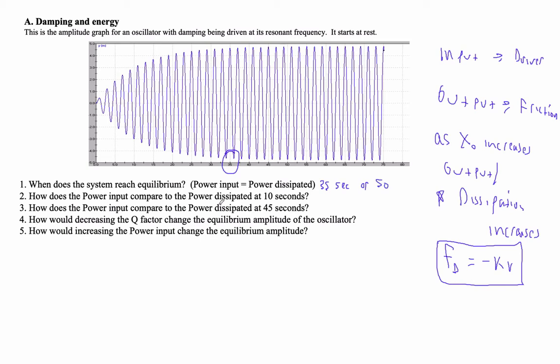How does the input compare to the dissipated at 10 seconds? Well, at 10 seconds, notice that the amplitude is still increasing, right? So at 10 seconds, the input is bigger than the dissipation, and that's why the amplitude is getting bigger.